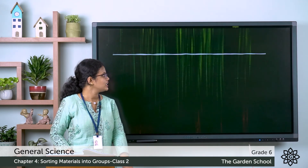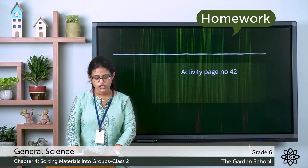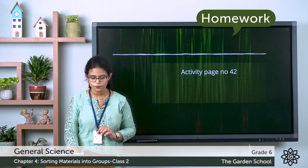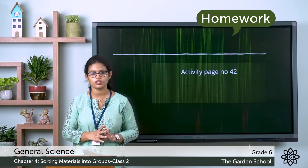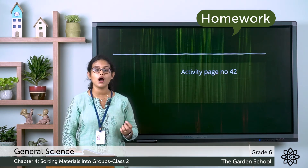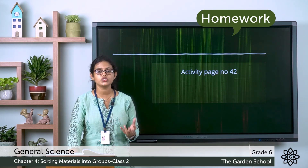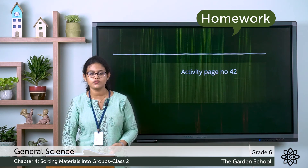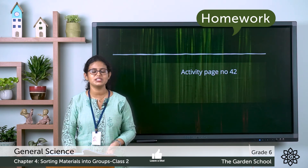You have an activity on page number 42. You can take a button, a cap of a bottle, a pen, and a few mung or gram seeds, and drop them into water. You have to find out which of these things float in water and which of these things sink in water. Record your observations, and once you are done, you can submit in Microsoft Teams.